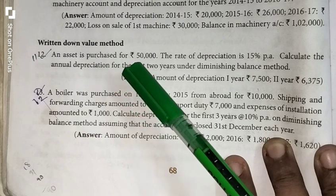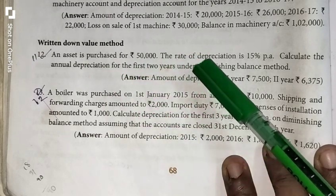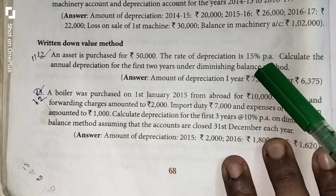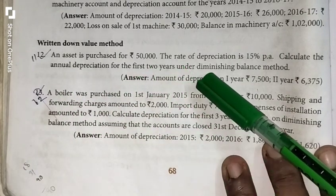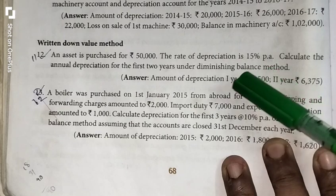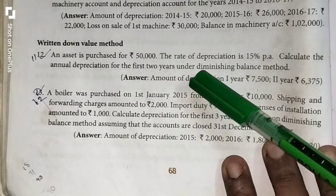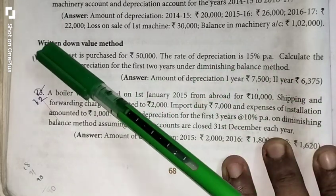An asset is purchased for Rs. 50,000. The rate of depreciation is 15% per annum. Calculate the amount of depreciation for the first two years under Diminishing Balance Method. What is the other name of Diminishing Balance Method? Written Down Value Method.